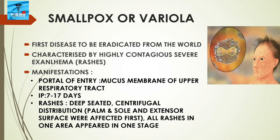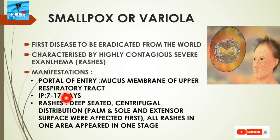Smallpox virus is variable in virulence. It was the first disease to be eradicated from the world. It is characterized by highly contagious, severe exanthem or rashes. The portal of entry is through the mucous membrane of the upper respiratory tract, and it has an incubation period of 7 to 30 days, with a mean incubation period of about 12 days.